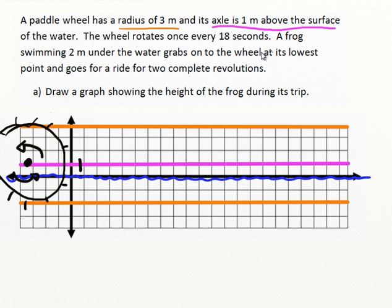Now we've got this frog, and it says a frog swimming 2 meters underneath the water. So there is negative 2 right there, and that would correspond to the lowest point on the wheel. If the frog grabs hold down here at this depth, it will then get carried around the wheel, and it's going to go up, and then back down underwater, and back up, and then underwater. The question is, how long will it take this to go around one complete cycle? We're told that the wheel rotates once every 18 seconds.